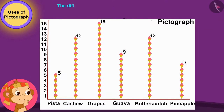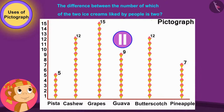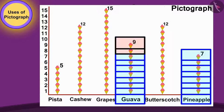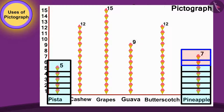Children, can you tell us which two ice creams have a difference of two in the number of people who liked them? You can stop the video and find the answer. That's correct. The Guava line has two ice cream symbols more than the Pineapple line, and Pineapple's line has two ice cream symbols more than Pista ice cream's line. So the difference between the number of people who like Guava and Pineapple, and Pineapple and Pista ice cream, is two.